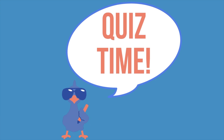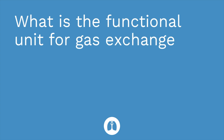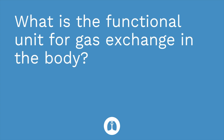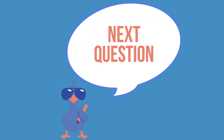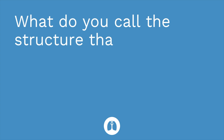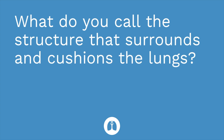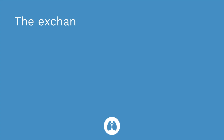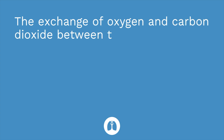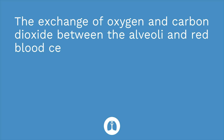All right, you guys ready for a quick quiz? Question number one: what is the functional unit for gas exchange in the body? The answer is the alveoli. Question number two: what do you call the structure that surrounds and cushions the lungs? The answer is the pleura. Question number three: the exchange of oxygen and carbon dioxide between the alveoli and the red blood cells is called what? The answer is diffusion.